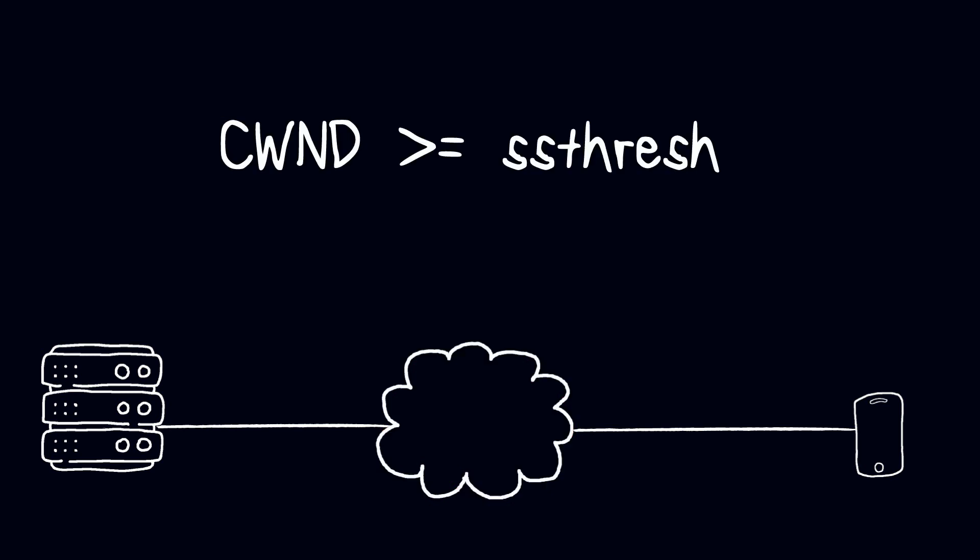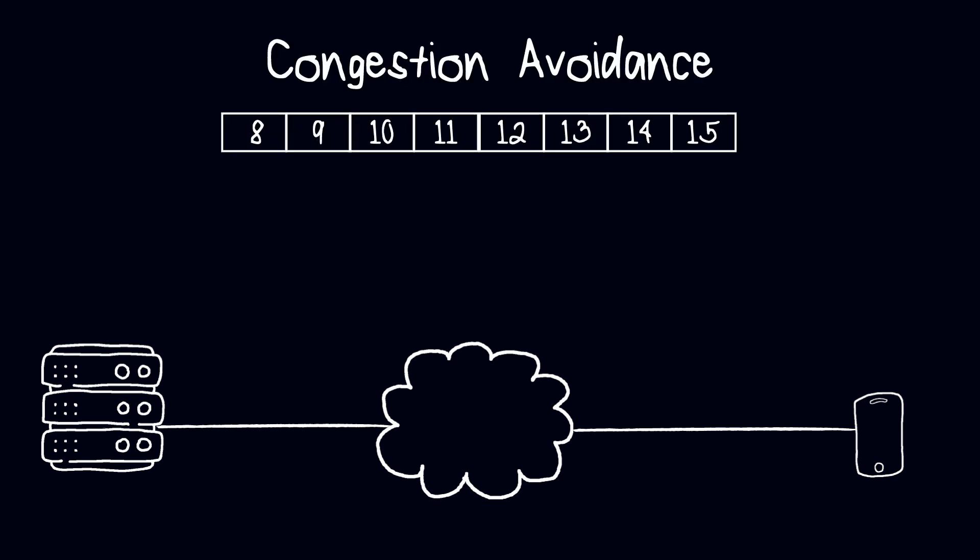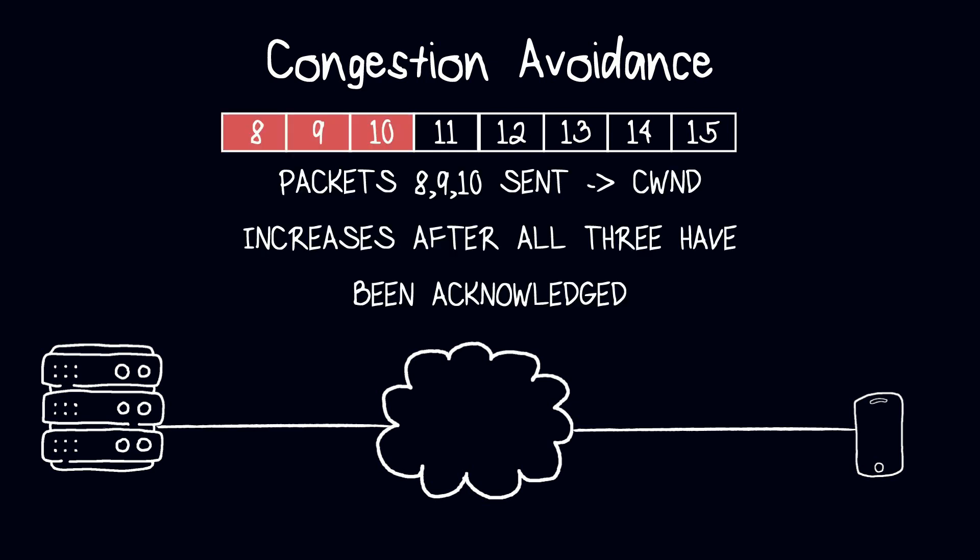Once the congestion window size has reached the congestion avoidance threshold, it enters the congestion avoidance phase. In this phase, the sender sends packets at a rate that is slower than slow start, because it increases the congestion window by one segment for every round trip time that has passed, and not for every single ACK. For example, if the sender sends three packets, the congestion window size will only increase when all these three packets have been acknowledged.